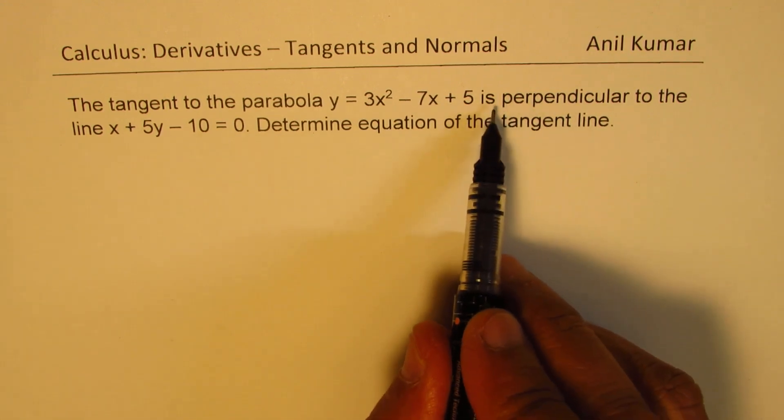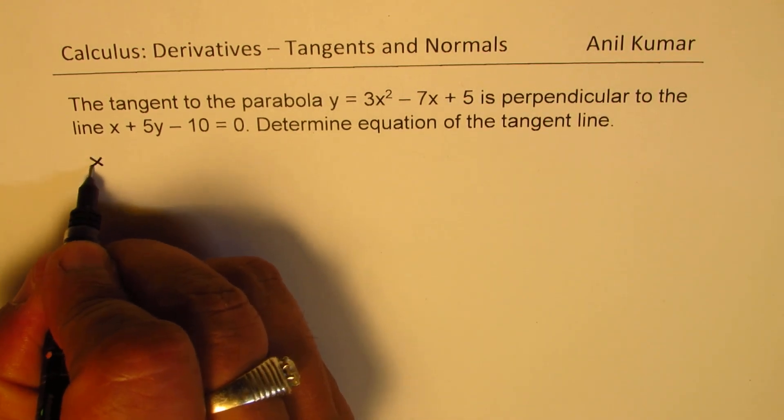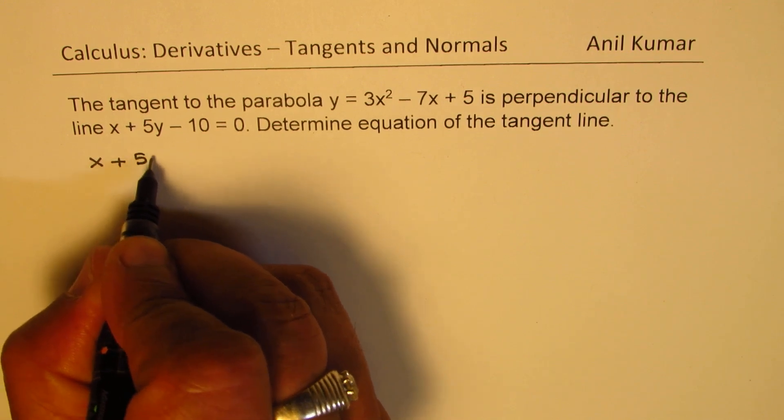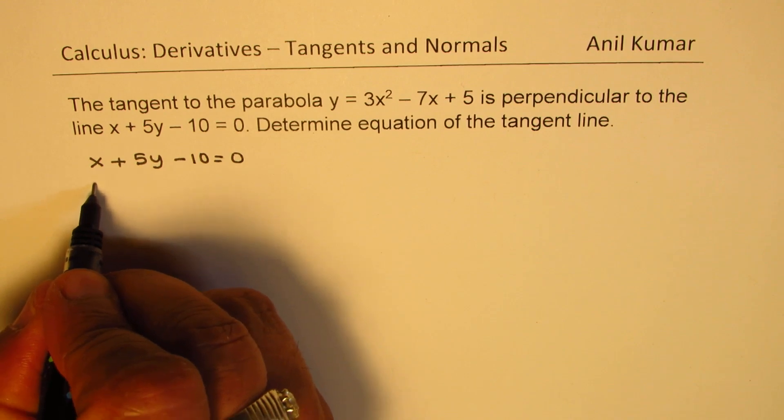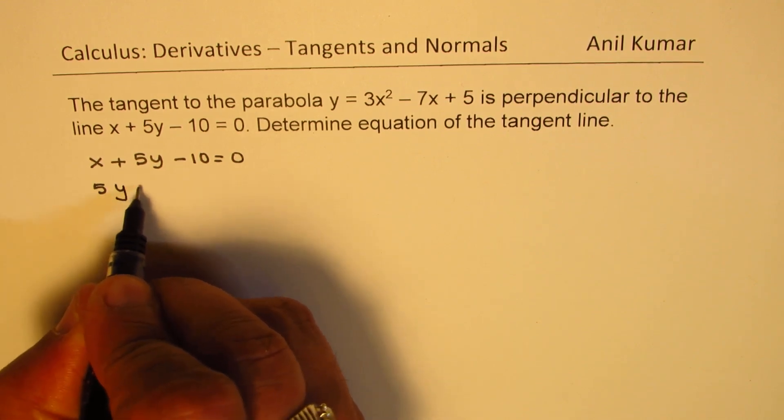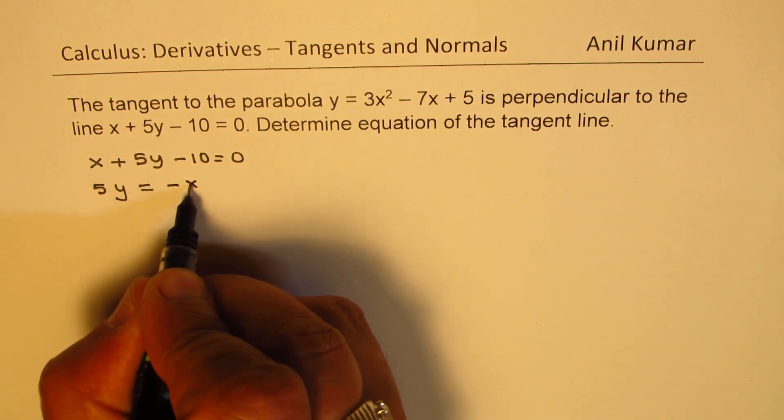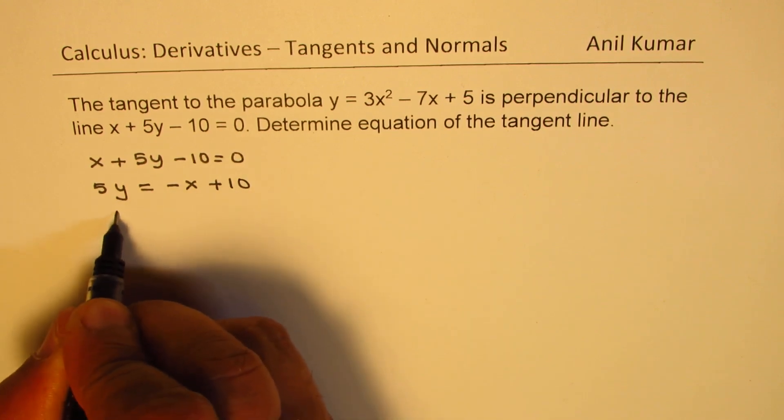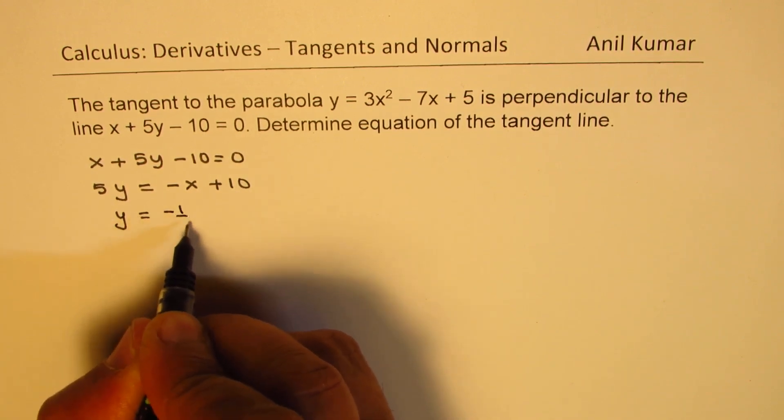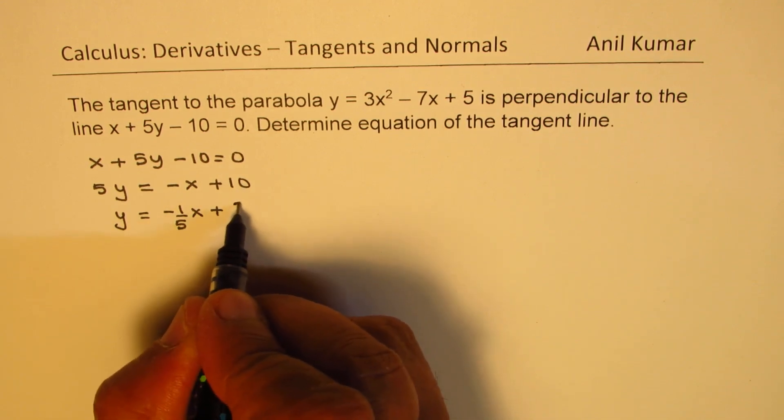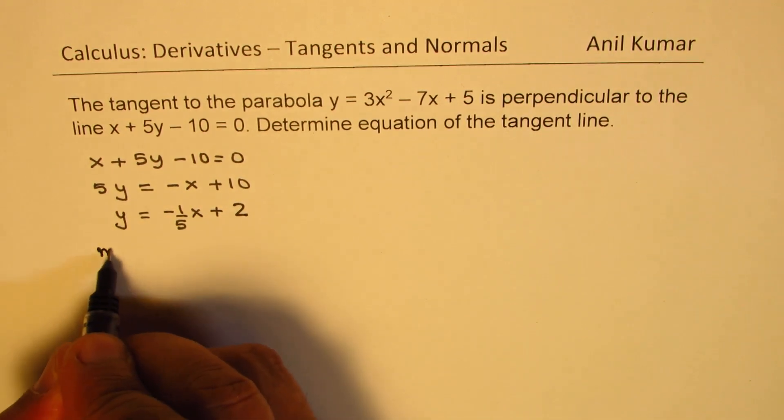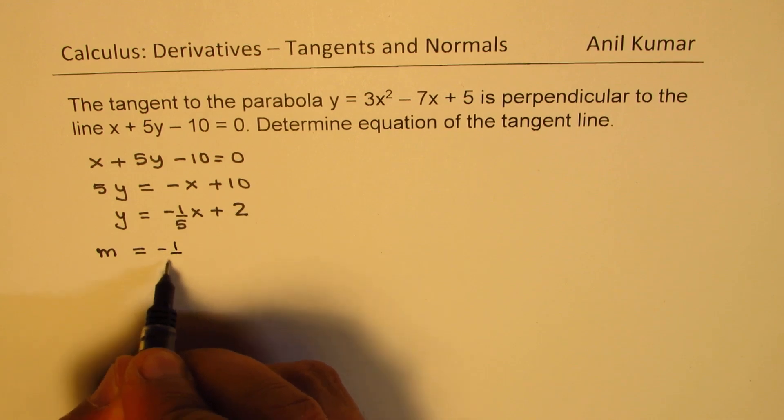So, we are saying it is perpendicular to the line. Line equation is x plus 5y minus 10 equals 0. Let us find slope of this line by rearranging the terms. So, we get 5y equals minus x plus 10 or y equals minus 1 over 5x plus 10 divided by 5, which is 2. So clearly, the slope of this line is minus 1 over 5.